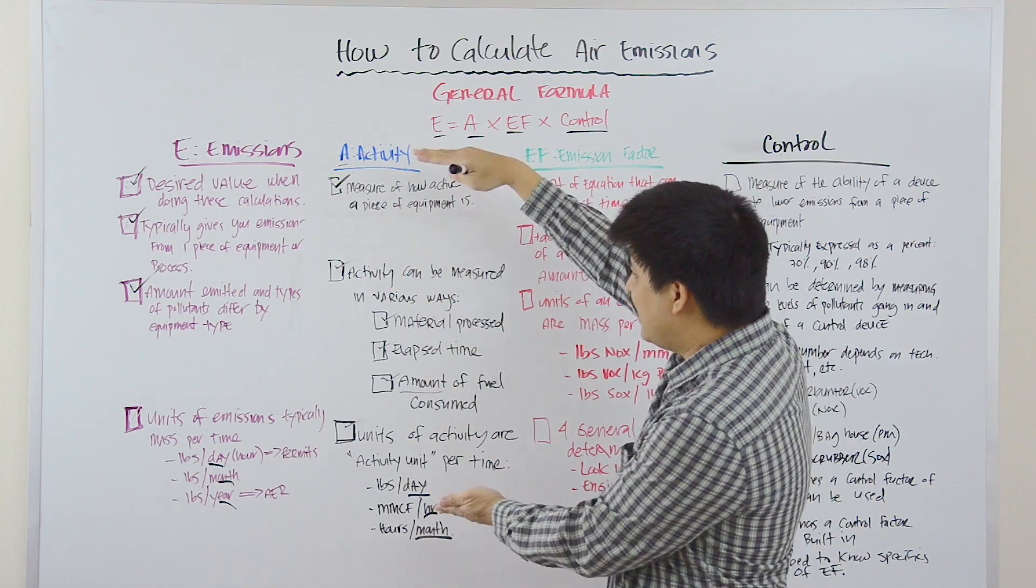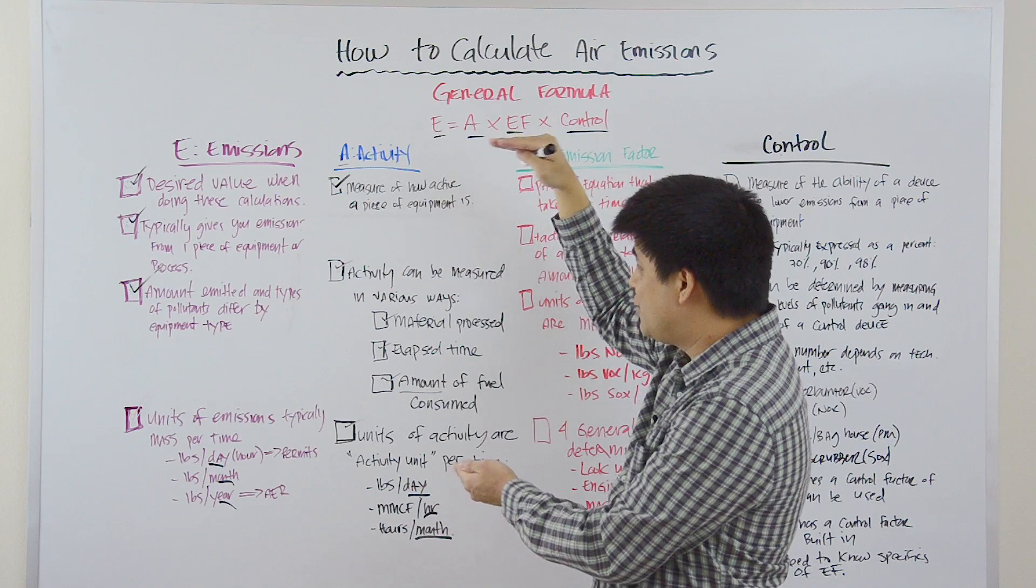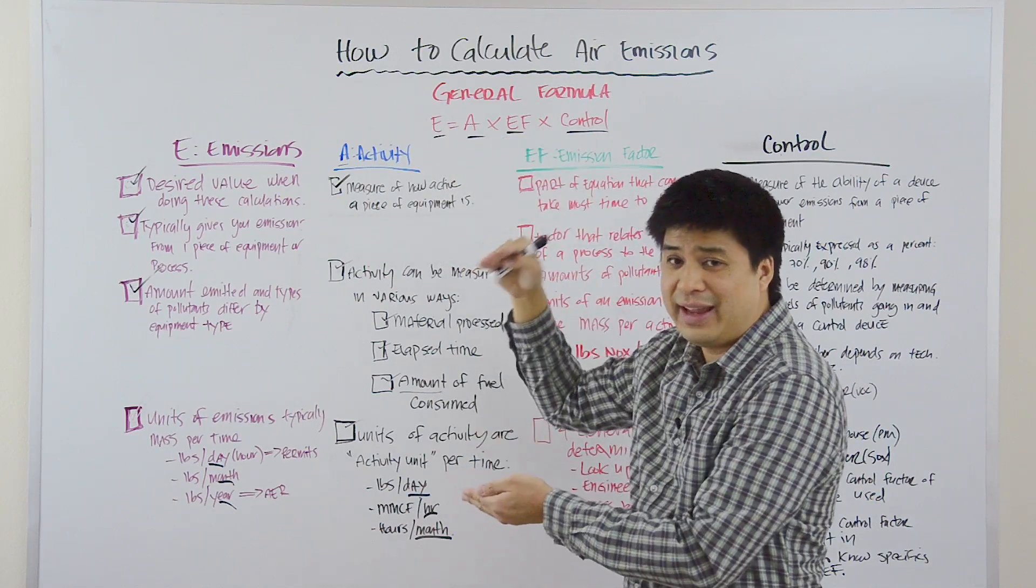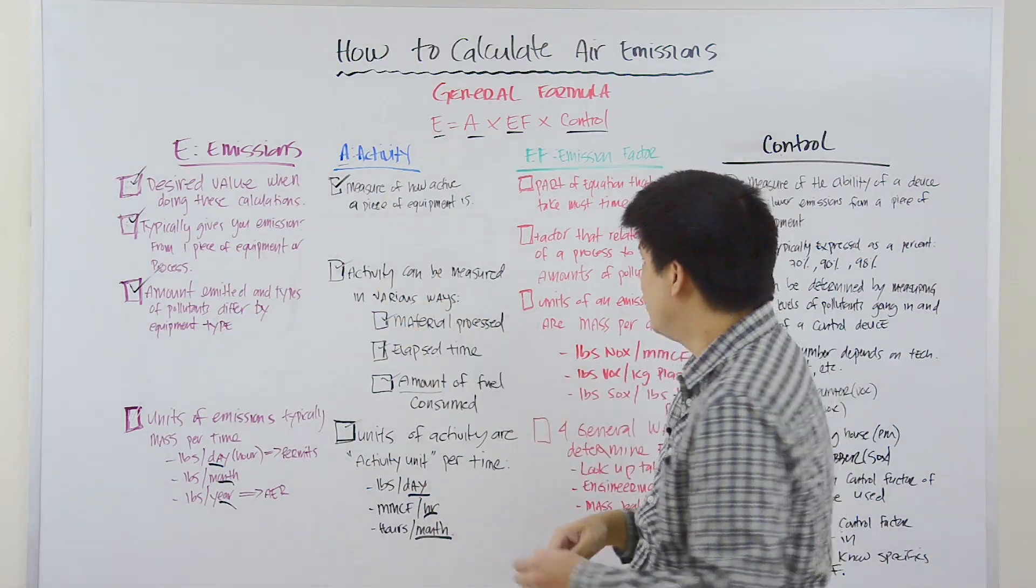And so, A again is the activity of that piece of equipment. And again, it's really quantifying the activity or how active is that piece of equipment.